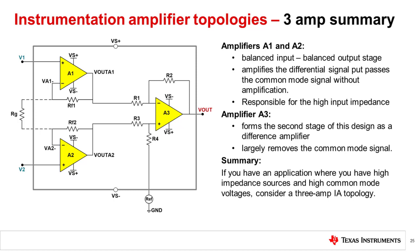To recap, in a 3-amp IA, amplifiers A1 and A2 form a balanced input, balanced output stage, which amplifies the differential signal but passes the common mode signal without amplification. These input amplifiers are also responsible for the high input impedance exhibited in 3-amp IA topologies. The third amplifier, A3, forms the second stage of this design as a difference amplifier and largely removes the common mode signal. If you have an application where you have high impedance sources, consider a 3-amp IA topology.